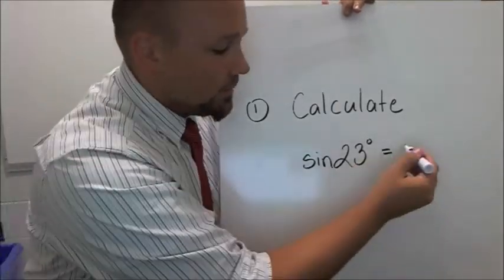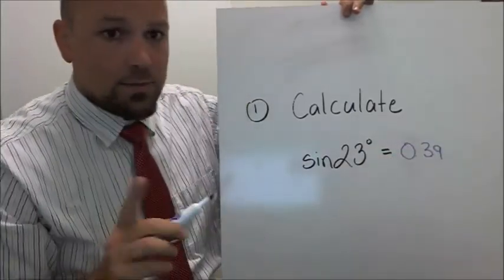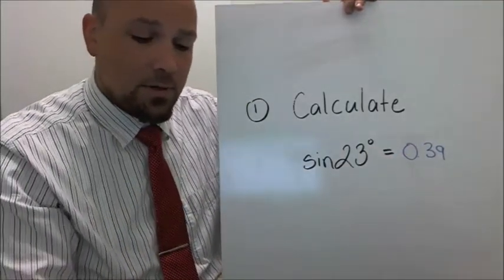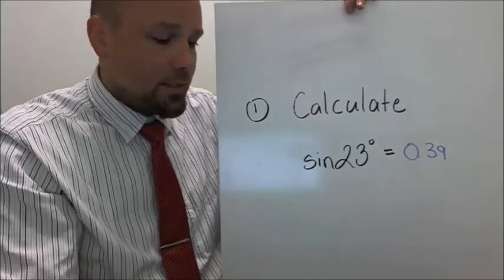So sine 23 is 0.39. So we need to know how to be able to just input it into the calculator. And now you're going to see an example of why we need to input it into a calculator.